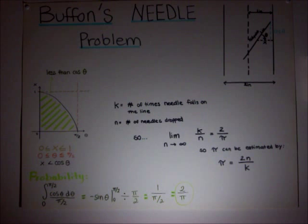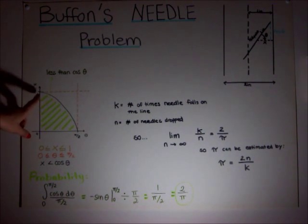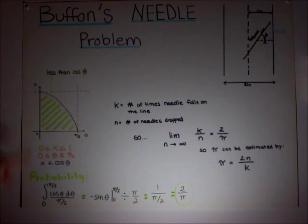We find the probability by taking the integral of the cosine theta graph, which is right here, and then we take it from 0 to pi over 2, which is shown right here, and divide it by pi over 2 because of the boundaries.